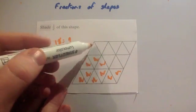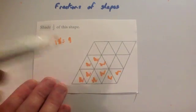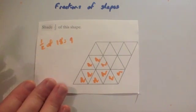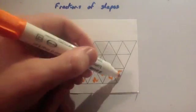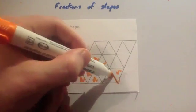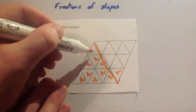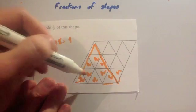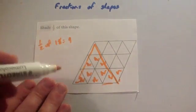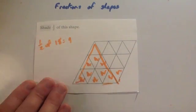Or you could shade in half of the shape in various ways — there are lots of ways to do these questions. You could just shade in half of it, or shade alternate ones, and so on. They're quite straightforward.